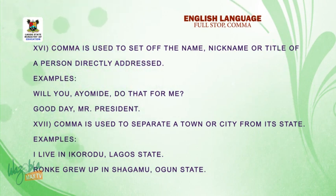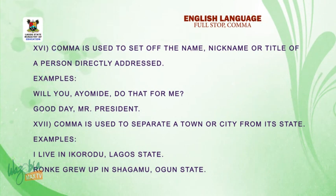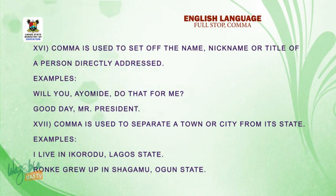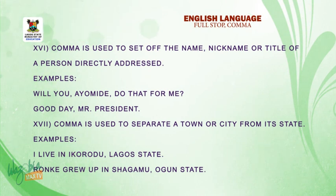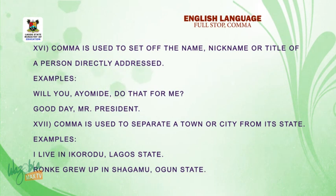Number seventeen: comma is used to separate a town or city from a state. Examples: I live in Ikorodu, Lagos State. Ronke grew up in Sagamu, Ogun State.